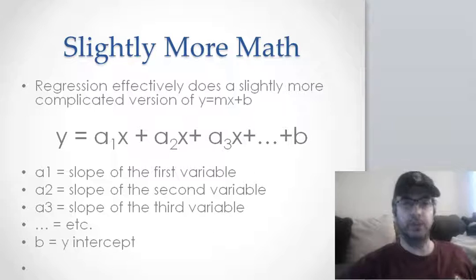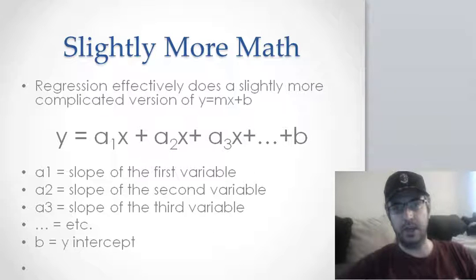a1 is the slope of the first variable. So as your first variable goes up, how much does y go up or down? a2, the slope of the second variable. As your second variable goes up, how much does your y go up or down? Your y, in this case.